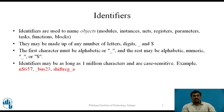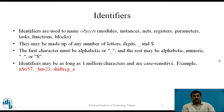Identifiers in Verilog are nothing but the names given to objects. These objects may be modules, instances, nets, registers, parameters, system tasks and functions, blocks, etc. Similar to the C programming language, they may be made up of any number of letters, digits, and underscore and dollar signs are also allowed.